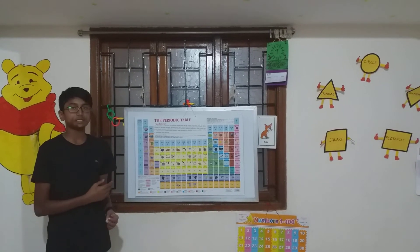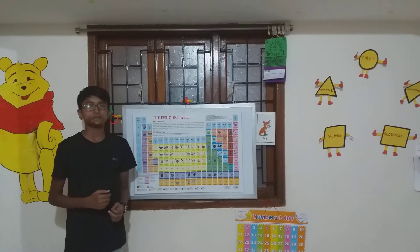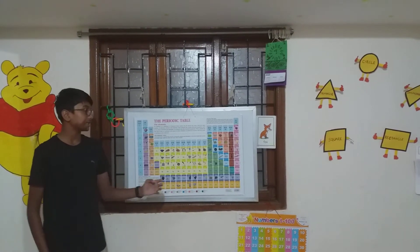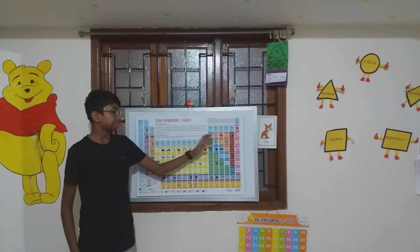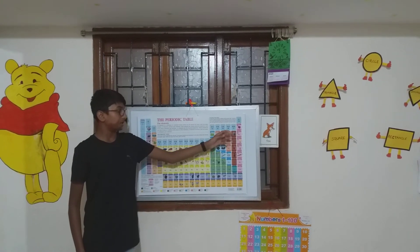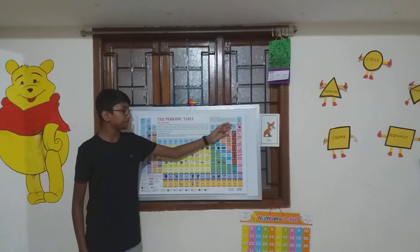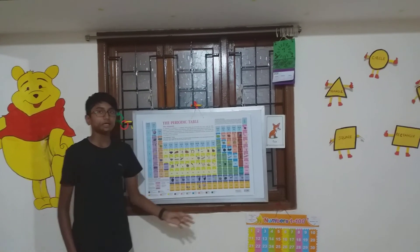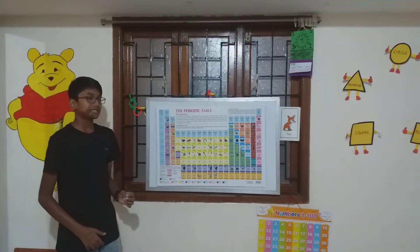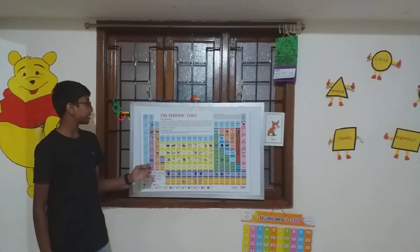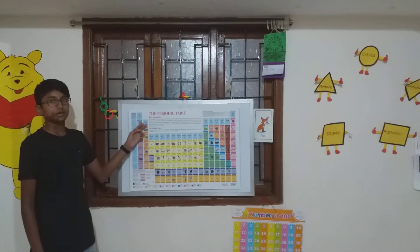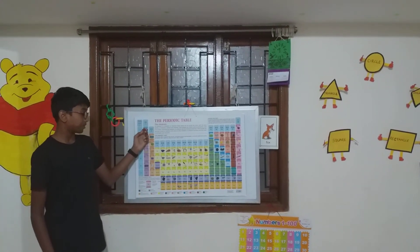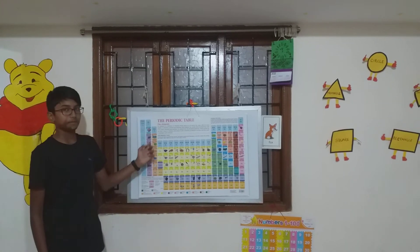Let us discuss about non-metals. Non-metals are present in the extreme right column of the periodic table, except for hydrogen which is present in the top left corner.